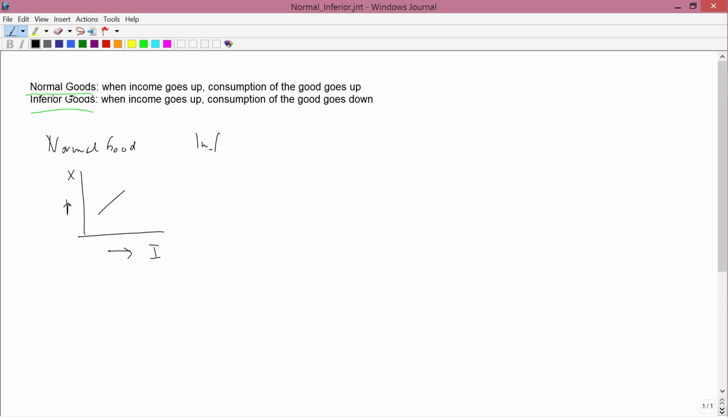An inferior good, again, x versus income. When income goes up, consumption of the good is supposed to go down. So this generates a negative slope, that when income goes up, consumption of the good goes down.